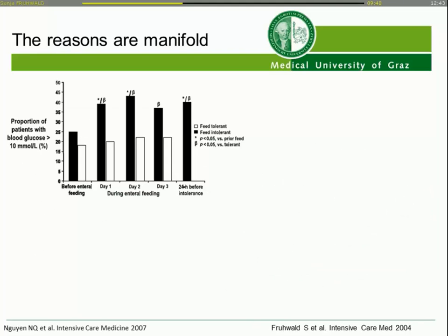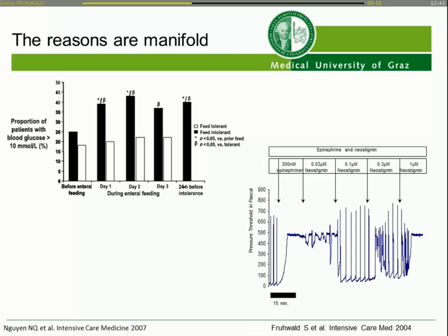The reasons why GI function is decreased are manifold. High blood glucose is one factor: a blood glucose value of 200 mg/dL doubles the time the stomach needs to empty. Patients with high blood glucose values had significantly more feeding intolerance compared to those with normal values.